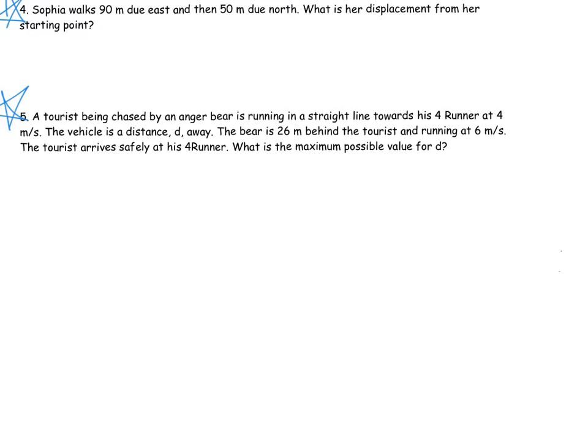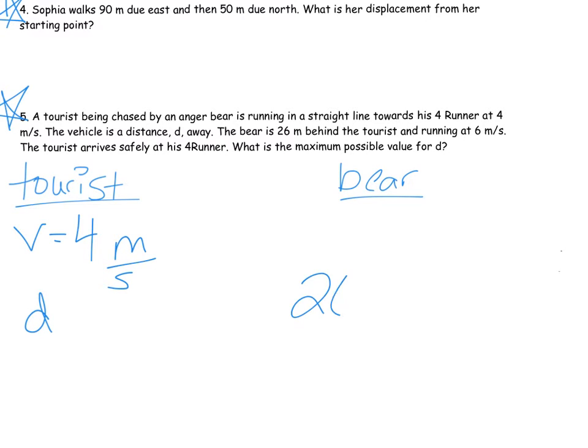Number five is definitely a challenging problem. You have two things going on - you have a tourist and you have a bear. Over here we have the tourist, over here we have Mr. Bear. The tourist is being chased by the bear and the tourist is running at four meters per second. The vehicle is some distance d away. The bear is 26 meters behind the person, so we know they're at least 26 meters behind the tourist. The tourist is d away from their four-runner, and the bear is traveling at six meters per second.